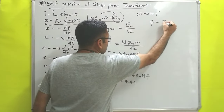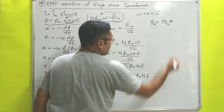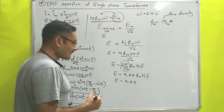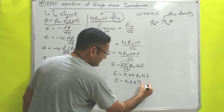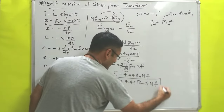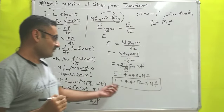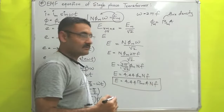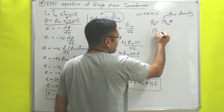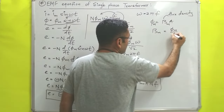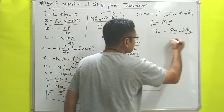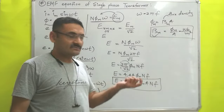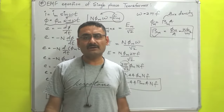Now, flux φm equals B × A. For maximum flux, that will be Bm (maximum magnetic field, also known as flux density) multiplied by the area A of the core. So the RMS value of potential is E = 4.44 Bm A N f, where Bm is flux density, A is the area of the core, N is number of turns, and f is frequency. The unit of magnetic flux density is Weber per meter squared. This is the complete EMF equation derivation. In the next video we will solve a numerical based on it. Read hard, work hard. Thank you very much.